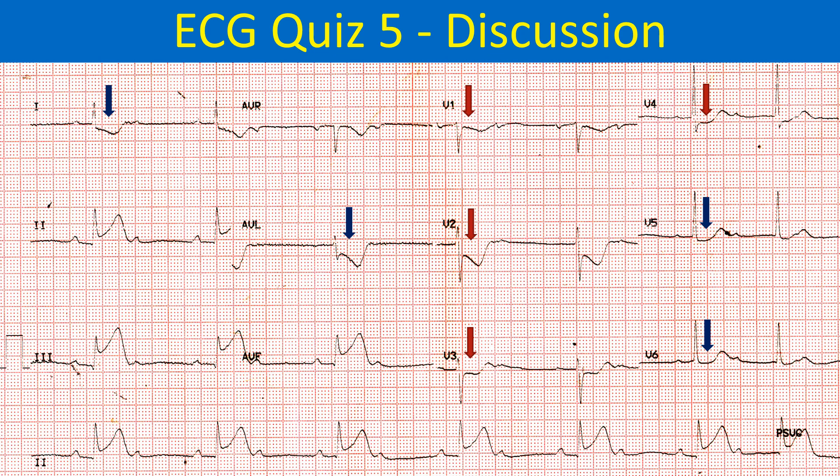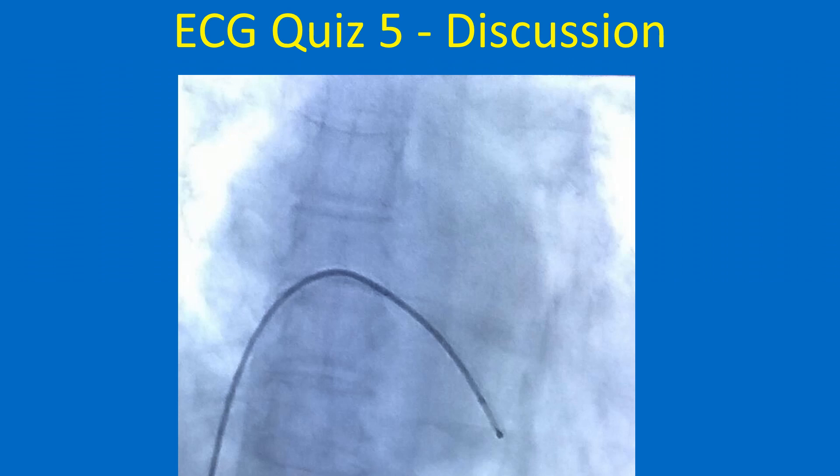Final proof will come from the coronary angiogram prior to primary angioplasty, which will be the therapeutic option of choice in this case. A temporary pacing wire will also be needed during the procedure, as there is a chance of development of complete heart block and symptomatic bradycardia.